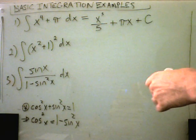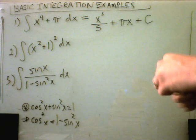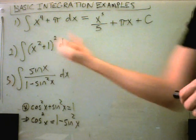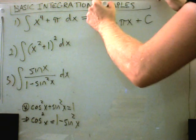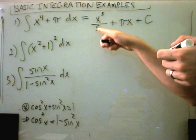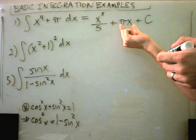As a check, you can take the derivative of the right-hand side and you should get what's right back in here. And notice in this case you will: the five would come out front when you take the derivative, cancel out with this five, get x to the fourth. Pi x would just become pi, and the constant would just become a zero.